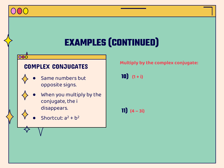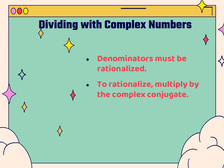Here is where we saw the conjugate. The conjugate is just going to be the same numbers but with an opposite sign on that i value. Just like with radicals, you can never ever leave an i in the denominator of a fraction, so you're going to have to rationalize. You do that by multiplying by the complex conjugate.